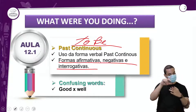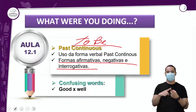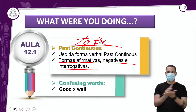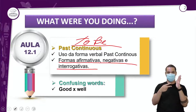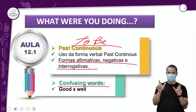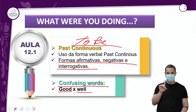Decidam-se aí. To be vai ser usado aqui sim, para a gente falar de coisas que no passado nós estávamos fazendo, quando uma ação estava acontecendo, com essa ideia de gerúndio mesmo. Vamos ver também sobre as nossas confusing words.